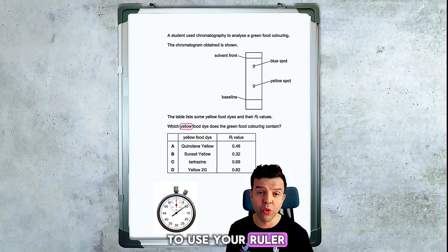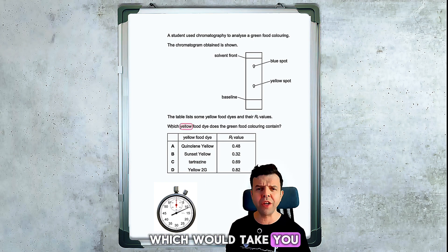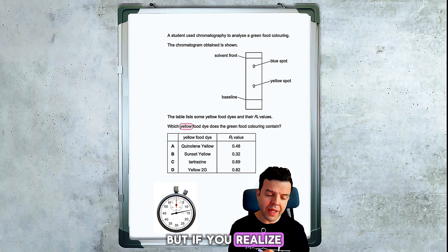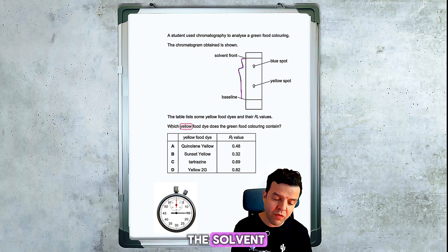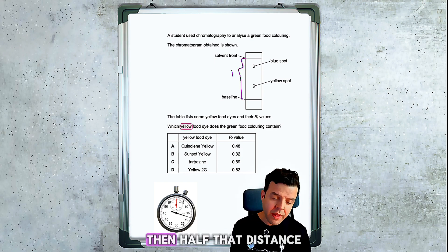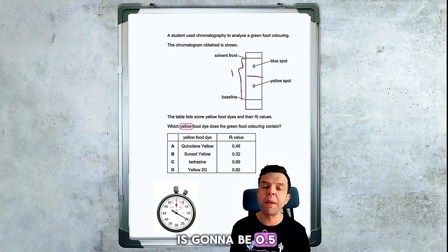The first way is to use your ruler and measure the distances, which would take you a long time. But if you realize that the distance from the solvent front to the baseline is worth one, then half the distance is going to be 0.5.